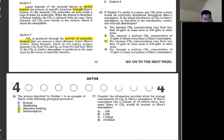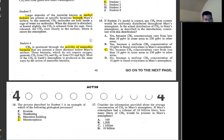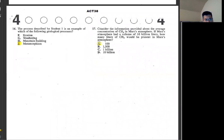Number 17, consider the provided average concentration of CH4 on Mars. If Mars atmosphere has a volume of 10 billion liters, how many liters of CH4 would be present in Mars atmosphere? We have to find the percentage. The first line says concentration of 10 parts per billion. So if you have 1 billion, it's 10. Then for 10 billion, it's 100. So A.